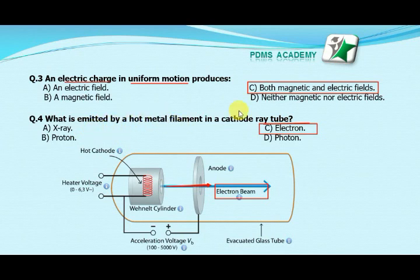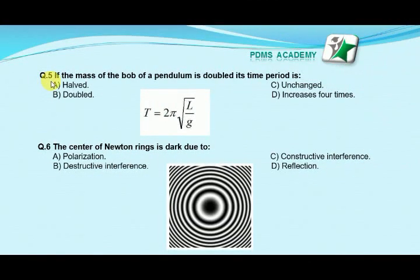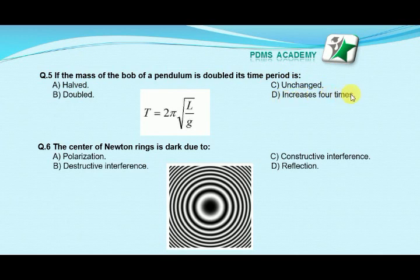Our next MCQ is: if the mass of the bob of a pendulum is doubled, its time period is — option A: half, option B: doubled, option C: unchanged, option D: increases 4 times. Our correct answer is C: unchanged. The time period of a simple pendulum depends only on length and g, not on mass.